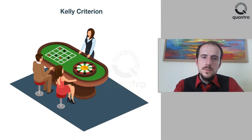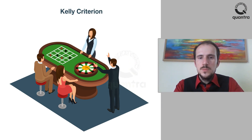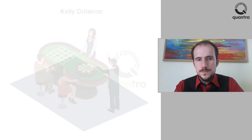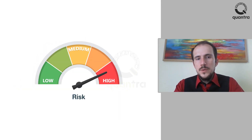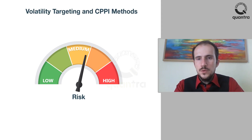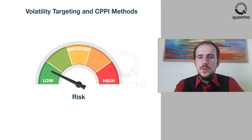Kelly criterion, a bet sizing technique used in gambling, was modified to give the optimal fraction of capital to allocate so that you could optimize potential returns. However, the risk is equally important to consider. Volatility targeting and CTPI methods focus on risk to determine the allocation to the risky asset or to your next trade. All these methods are covered in detail in this course.